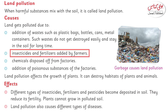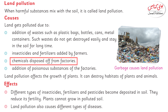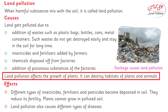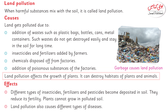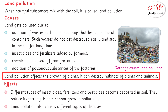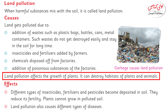Directly and indirectly the soil is disturbed. Chemicals are disposed of from factories and poisonous substances are added from industrial sources. Land pollution affects the growth of plants. If the soil is poor, how will the plant grow? How will the plant get nourishment and how will development improve?